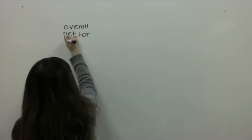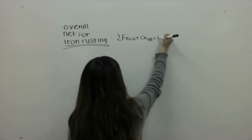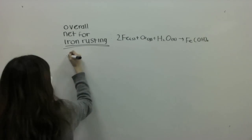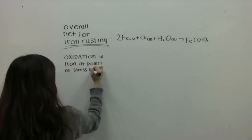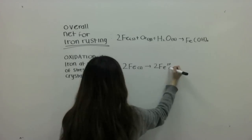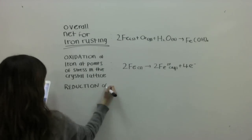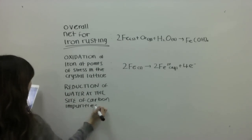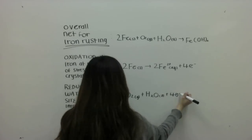This is the overall net equation of iron rust. The following oxidation reaction shows how points of stress in the nail help the iron to be easily oxidized, and the following reduction reaction shows how carbon impurities in the nail allow water to be reduced.